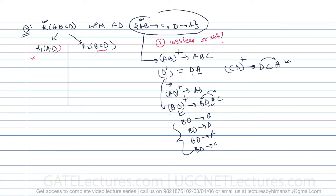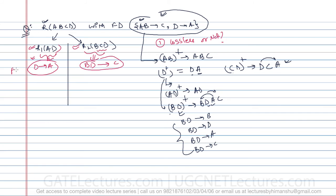When checking functional dependency preservation, first find all additional functional dependencies derivable from the original set, then identify which are valid for each sub-relation. For R1(A, D), the valid functional dependency is D→A. For R2(B, C), the only valid functional dependency from the full closure is BD→C.